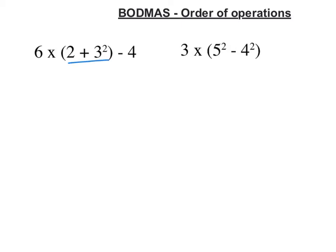So in this first one here we've got a bracket here. And what's happening inside the bracket is an addition and a power. Powers come before addition. So my next line would be 6 times bracket 2 plus 3 squared. 3 times 3 is 9.